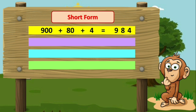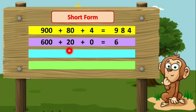Let's take another example: 600 + 20 + 0. To find the short form, we will write six as we have six hundreds. We have twenty, which means two tens, so we will write two after six. Then we have zero ones, so we will write zero after two. The short form of 600 + 20 + 0 is six hundred and twenty (620).